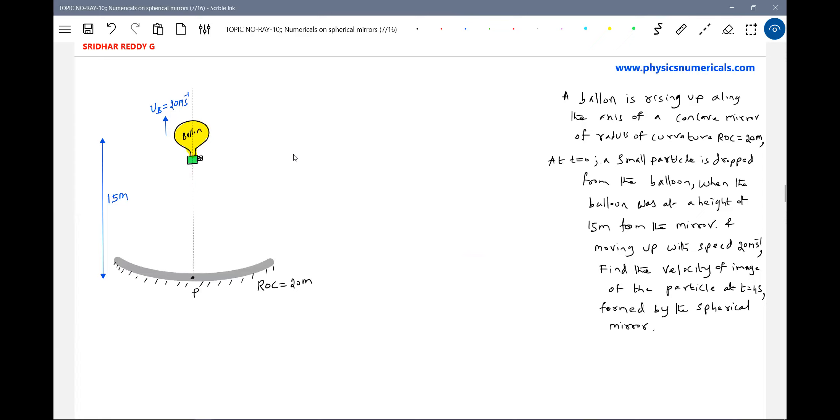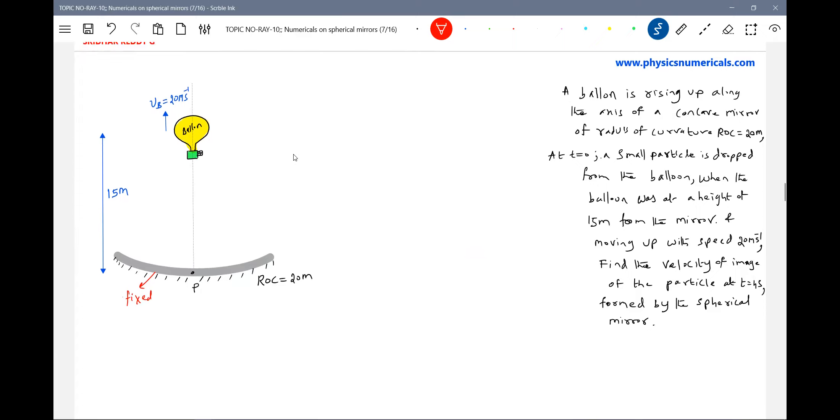Now what is the state of mirror? Mirror is at rest. I think this is a very important condition. Mirror will be attached. The balloon is ascending. So what is the method here?